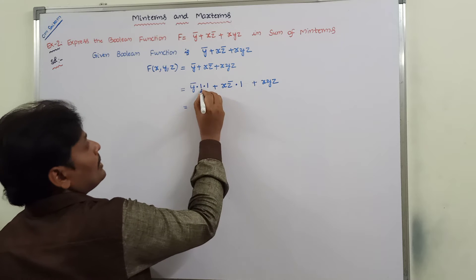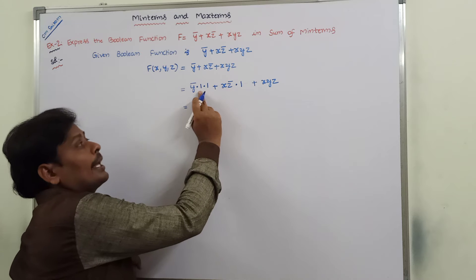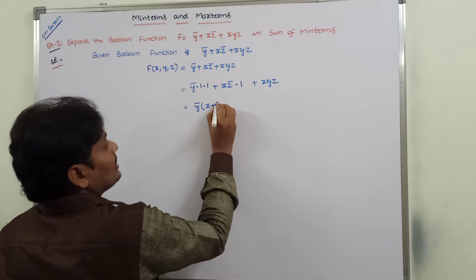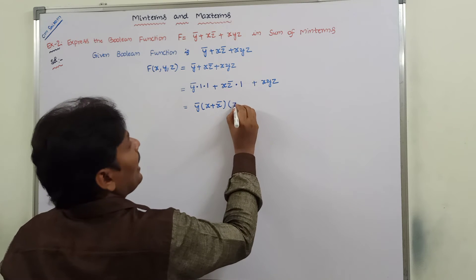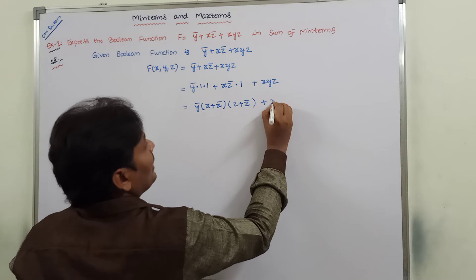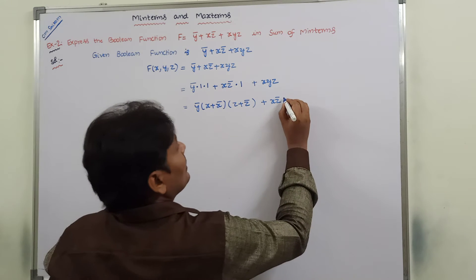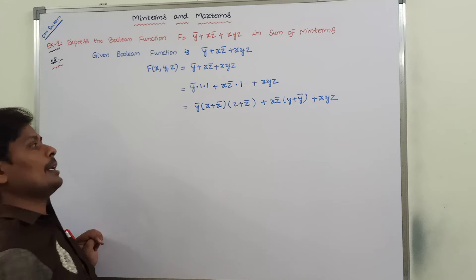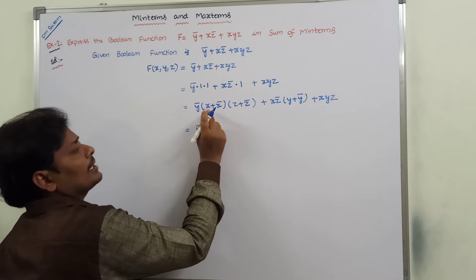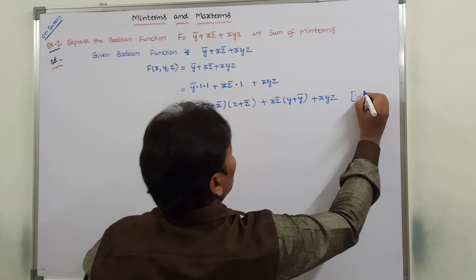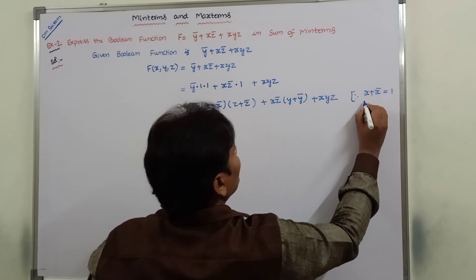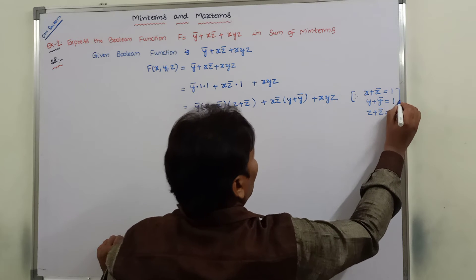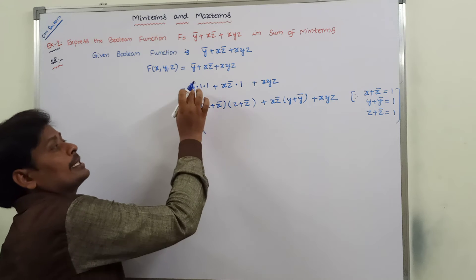For the first product term ȳ, x is missing — that can be rewritten as (x + x̄) — and z is missing — that can be written as (z + z̄). For the second product term, xz̄, variable y is missing — that can be written as (y + ȳ). In the third product term, there are no variables missing. Note that x + x̄ = 1, y + ȳ = 1, and z + z̄ = 1, so ȳ multiplied by one and one is simply ȳ.